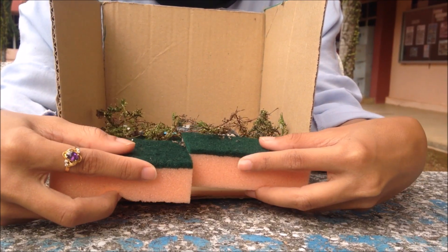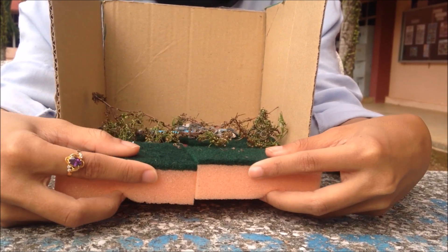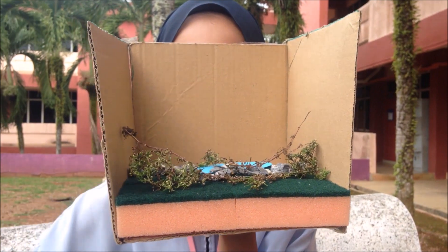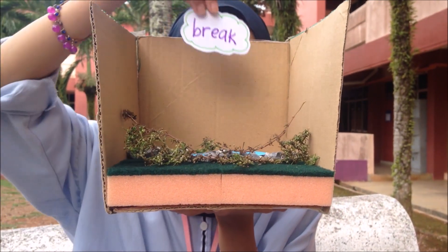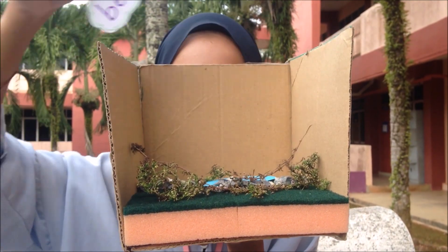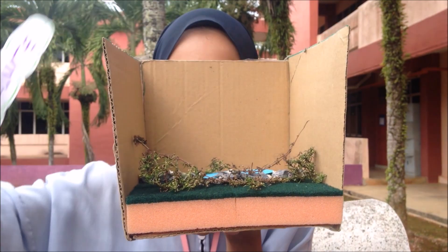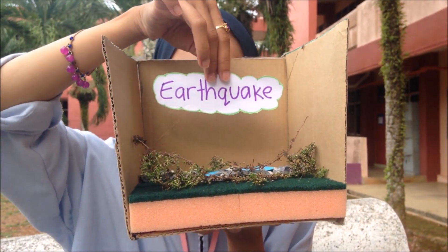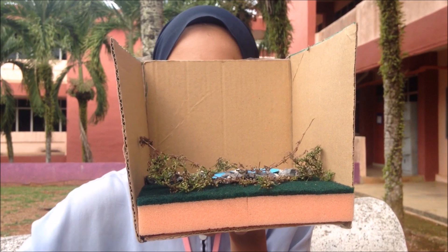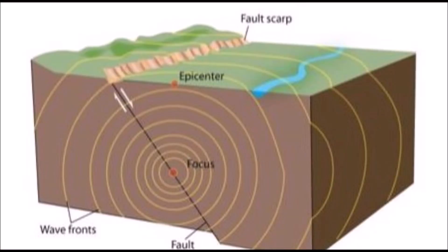When two plates are rubbing against each other, they stick a little. The rocks are still pushing against each other but not moving. After a while, the rocks break because of all the pressure that's built up. When the rocks break, the earthquake occurs. During the earthquake and afterward, the plates or blocks of rocks start moving and they continue to move until they stick again. The spot underground where the rock breaks is called the focus of the earthquake. The place right above the focus is called the epicenter of the earthquake.